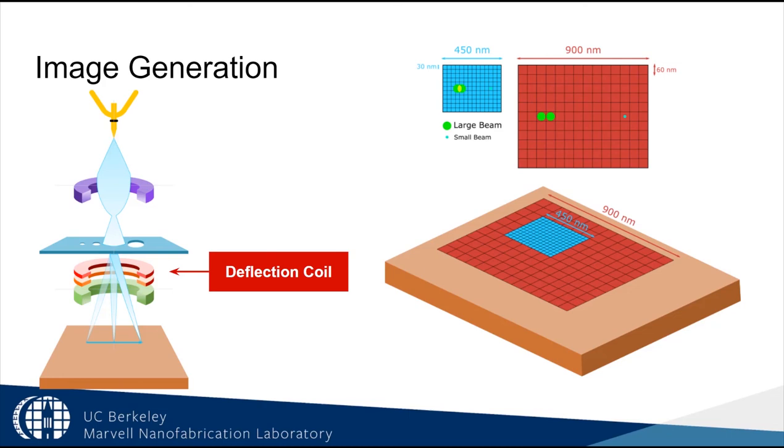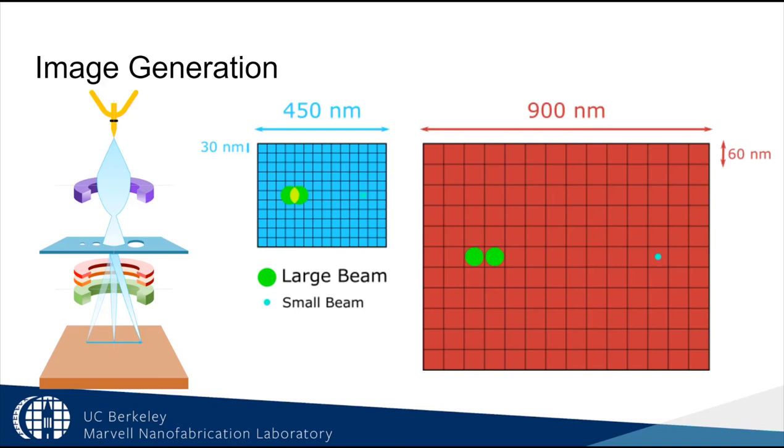In an optical microscope, you change the magnification by using a different physical lens. In an electron microscope, you zoom in simply by reducing the area over which you are deflecting the beam. This increases the magnification. If you have a very large magnification but also a very large beam, you can oversample your image where the spot size of the beam is larger than your pixel size.